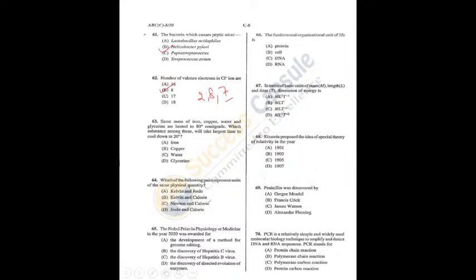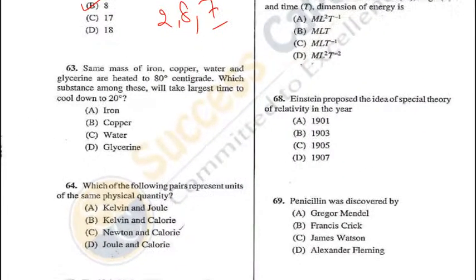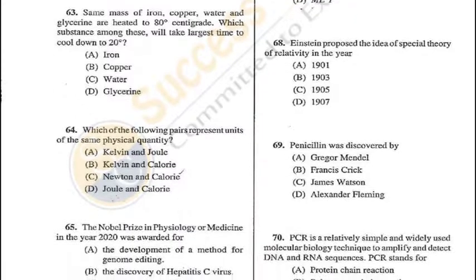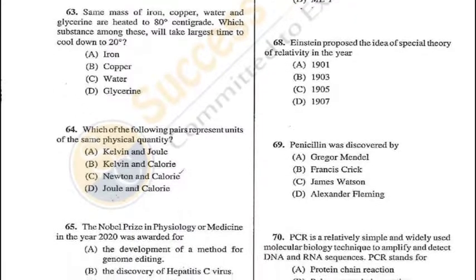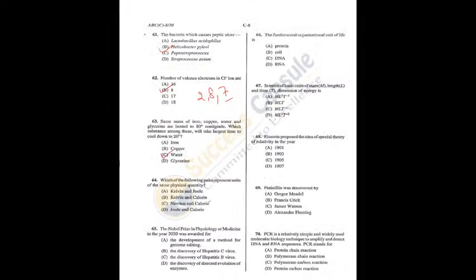Question 63: Same mass of iron, copper, water, and glycerin are heated to 80°C. Water will take the maximum time to cool down to 20°C — C is the correct answer. Question 64: Which of the following pairs represent units of the same physical quantity? Joule and calorie are both units of energy; 1 joule = 0.24 calories — D is the correct answer. Q63 = C, Q64 = D.